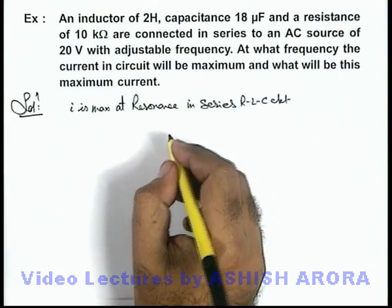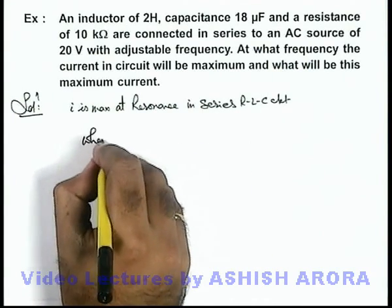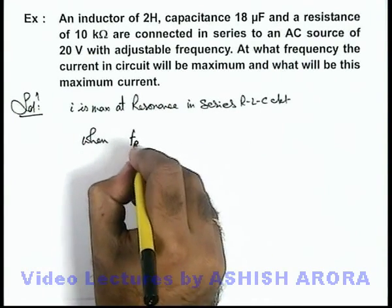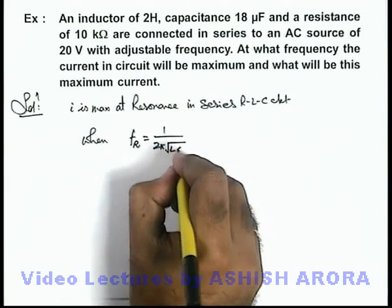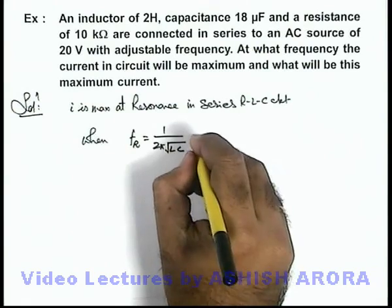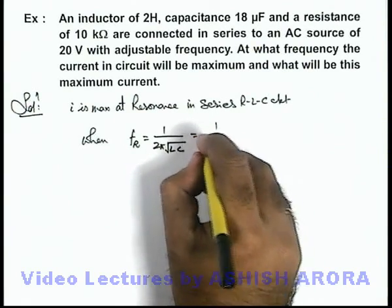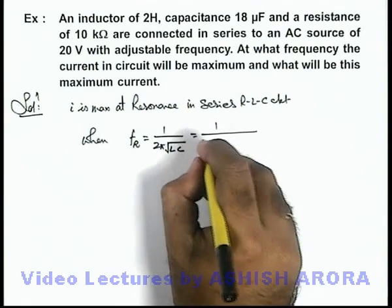And it happens when the value of frequency, the resonant frequency, we can write as f₀ = 1/(2π√LC). So this frequency we can directly calculate by substituting the values. This will be 1 by 2π,